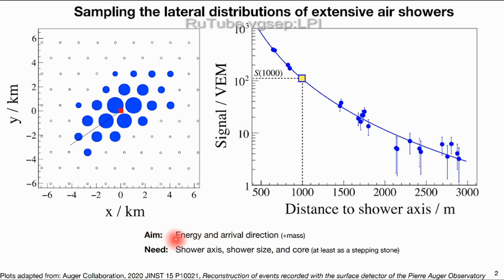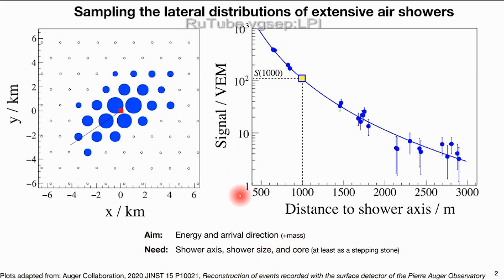The aim is to reconstruct the energy and arrival direction of ultra-high-energy cosmic rays, as well as possibly their mass. To do this we need to reconstruct the shower axis and the size of the shower — this S1000 I mentioned — which requires an estimate of the core as a stepping stone. These are all important elements for why asymmetries matter.